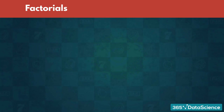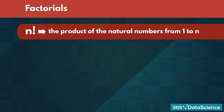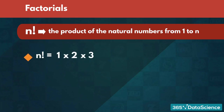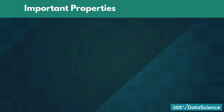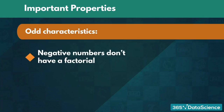The notion n factorial is used to express the product of the natural numbers from 1 to n. This means that n! = 1 × 2 × 3 × ... × n. For instance, 3! is equal to 6 since 1 × 2 × 3 = 6. Before we get into the more complicated concepts, you should know one odd characteristic: negative numbers don't have a factorial, and 0! is equal to 1 by definition.